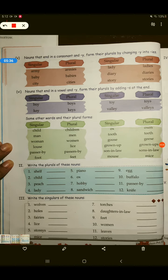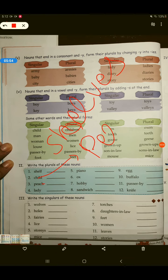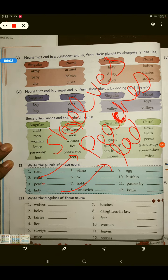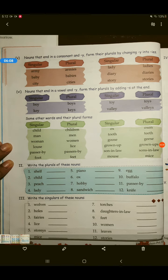Write the plurals of these nouns. आपको इन सब के plural लिखने हैं. I will do four for you. Rest, you will do for your homework. Shelf, shelves. S-H-E-L-V-E-S. Child, children. ये दिया हुआ है यहां पे. Peaches. P-E-A-C-H-E-S. This is C. Okay? Lady, ladies. L-A-D-I-E-S.